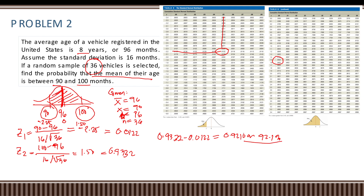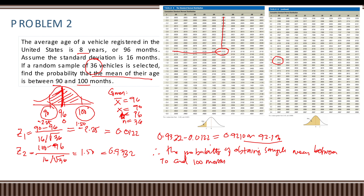Therefore the probability of obtaining a sample mean between 90 and 100 months is 92.1 percent. That is, P(90 < x-bar < 100) = 92.1%.